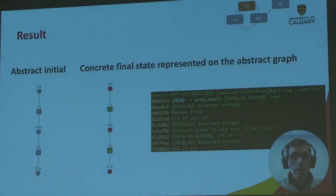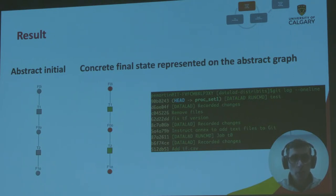Here we can see that all tasks depicted by the abstract graph have been completed. A concrete graph is completed, and for ease of comparison, it has been overlaid on top of the abstract graph nodes. By selecting different branches, we can see the progress of every run on the representation of the abstract graph.